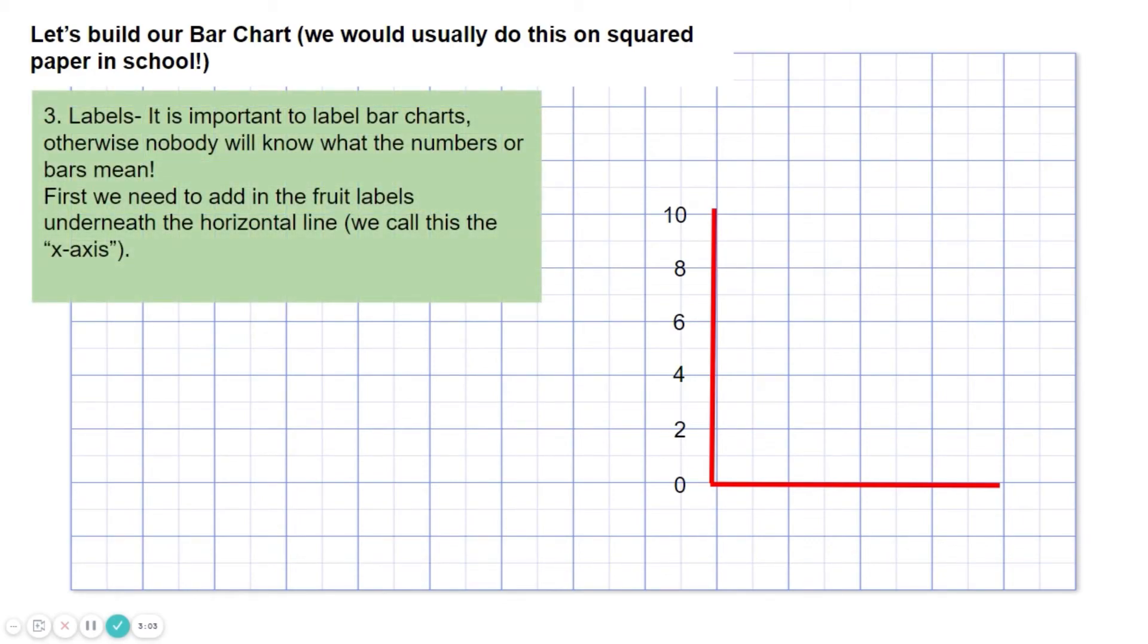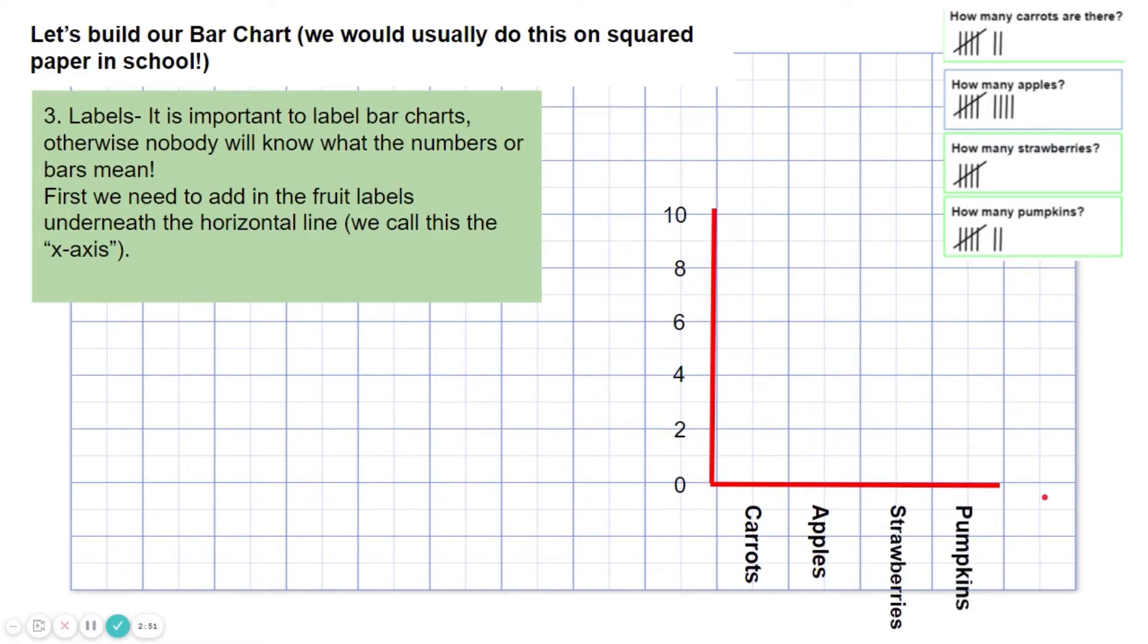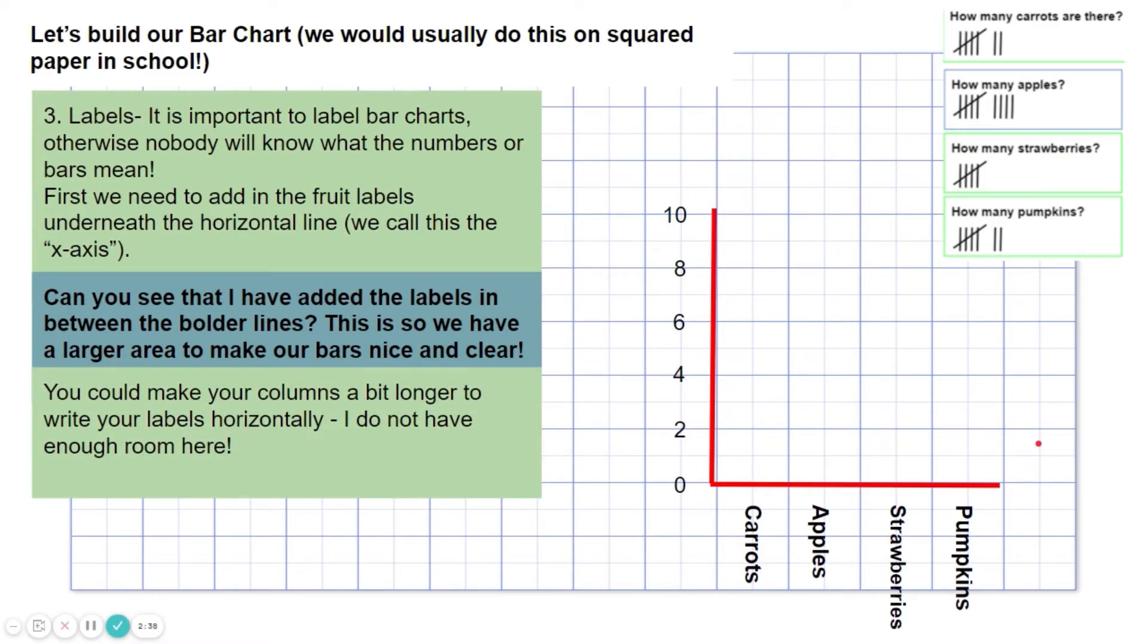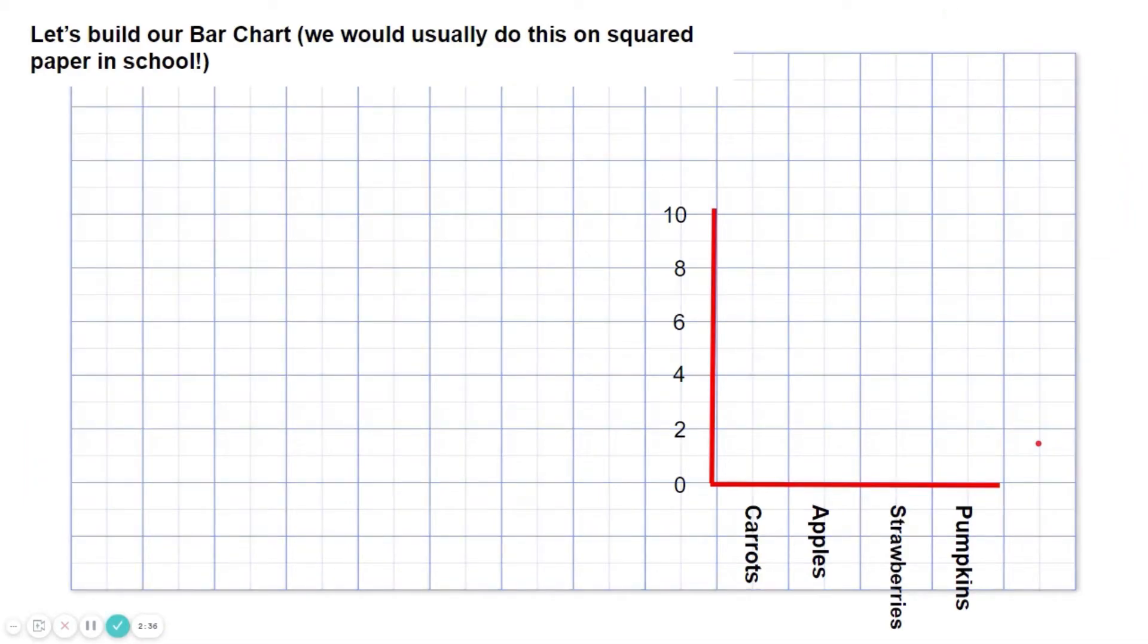Labels. It is important to label bar charts, otherwise nobody will know what the numbers or bars mean. First, we need to add in the fruit labels underneath the horizontal line. We call this the x-axis. We'll keep the tally chart there to keep a track of what we're doing. So we've got carrots, apples, strawberries and pumpkins. Can you see that you've added the labels in between the border lines? This is so we have a larger area to make our bars nice and clear. You could make your columns a bit longer to write your labels horizontally, but I haven't got enough room here, unfortunately.